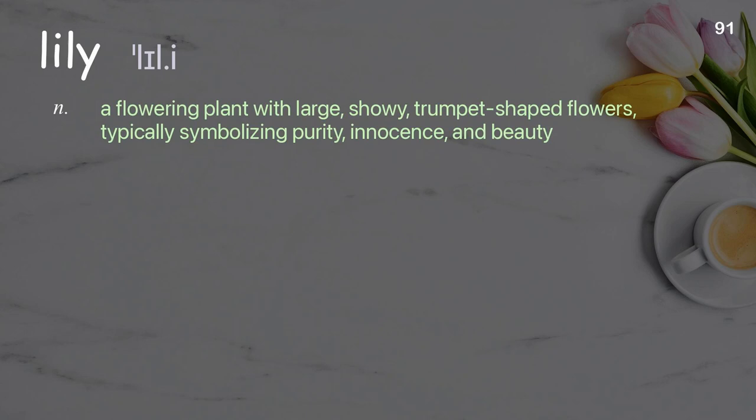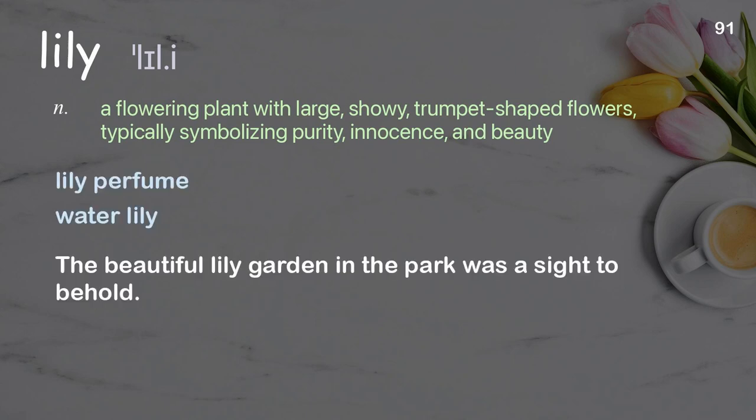Lily: a flowering plant with large, showy, trumpet-shaped flowers, typically symbolizing purity, innocence, and beauty. Examples: lily perfume, water lily. The beautiful lily garden in the park was a sight to behold.